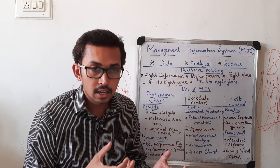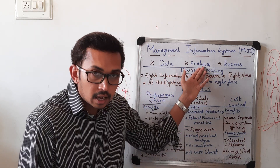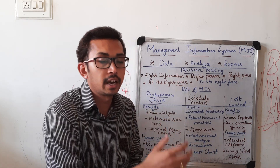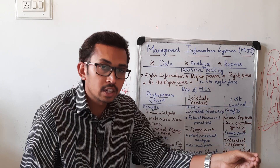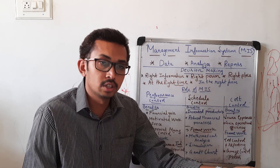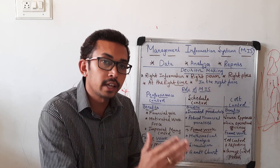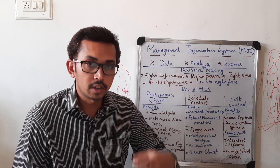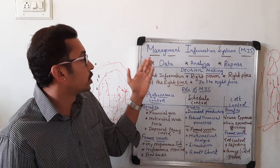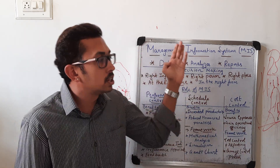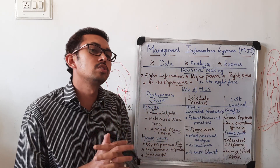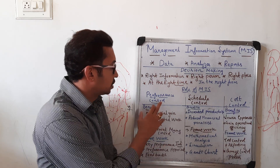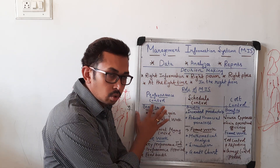MIS is going to gather the data, analyze the data, and report the information in the prescribed format to the management or project manager, to help take the necessary decisions for the progress of an organization. The main roles of the Management Information System are: performance control, schedule control, and cost control.